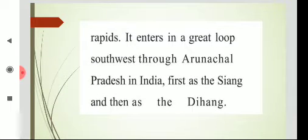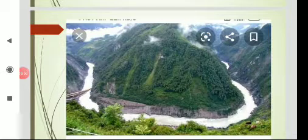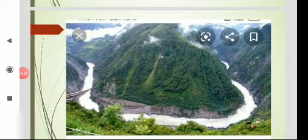It then enters in a great loop south-west through Arunachal Pradesh in India — first as the Tsang, then as Dihang. It moves around a mountain and takes the shape of a loop at south-west, then enters into Arunachal Pradesh. You can observe in this picture river Brahmaputra taking a U-turn around the mountain Namcha Barwa.